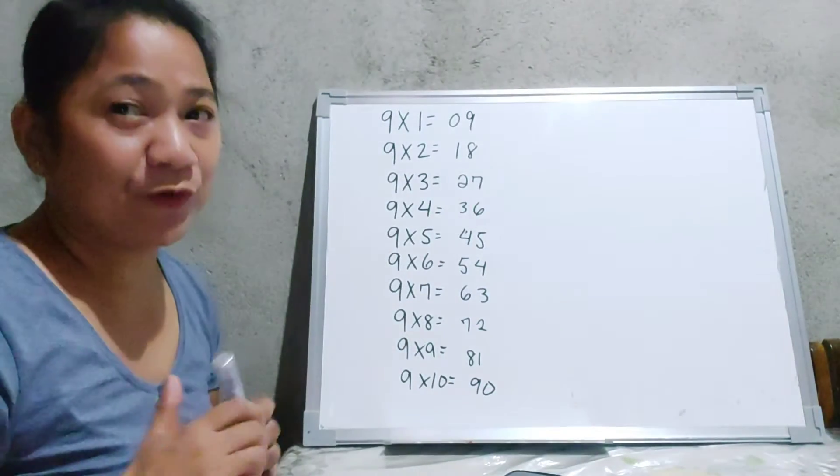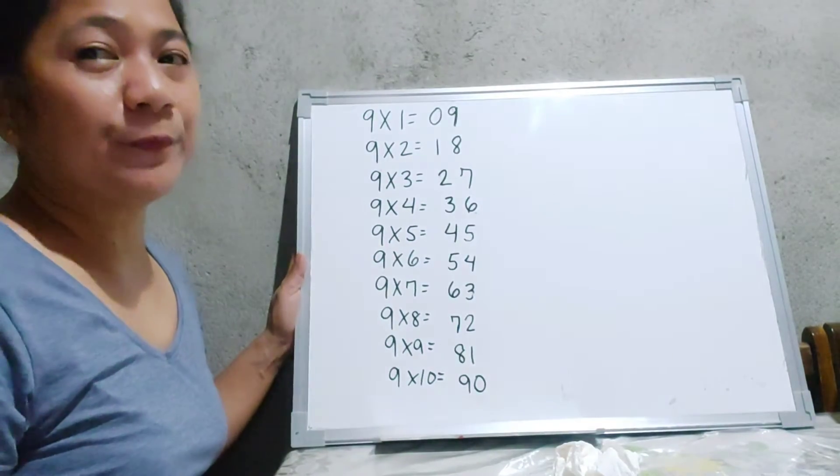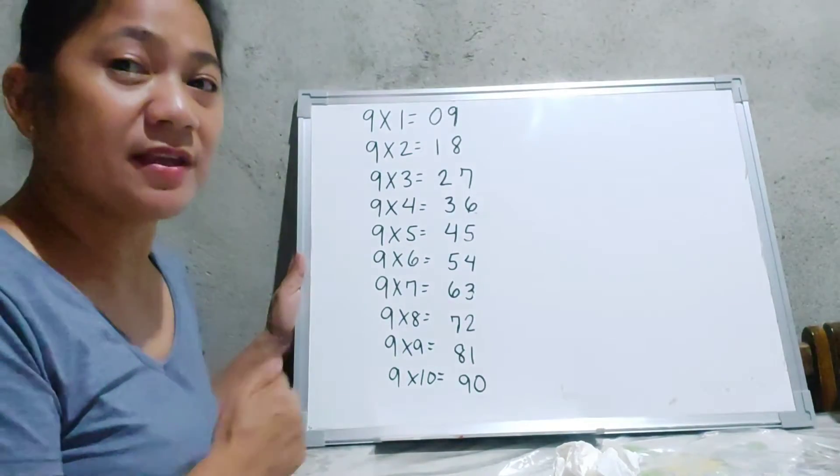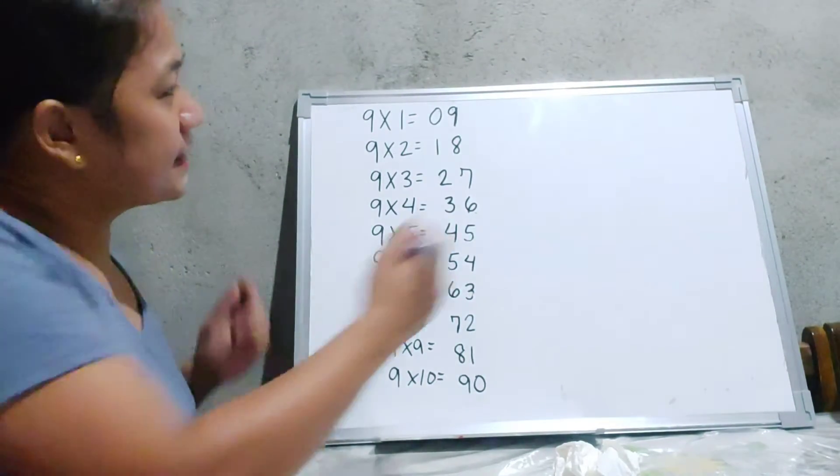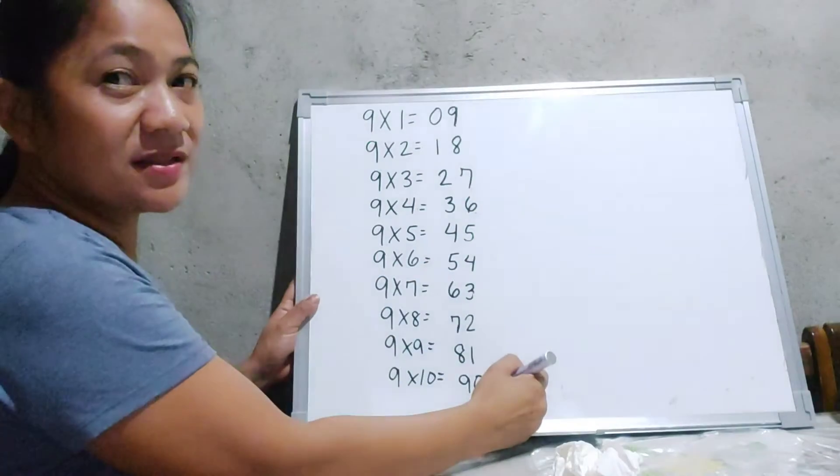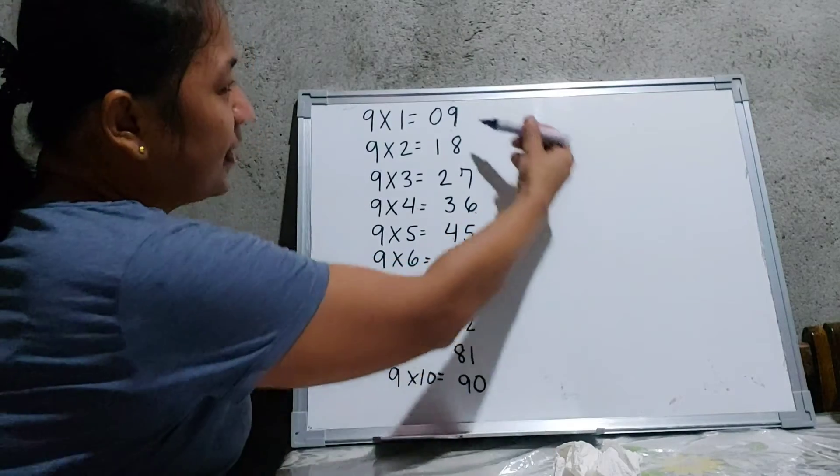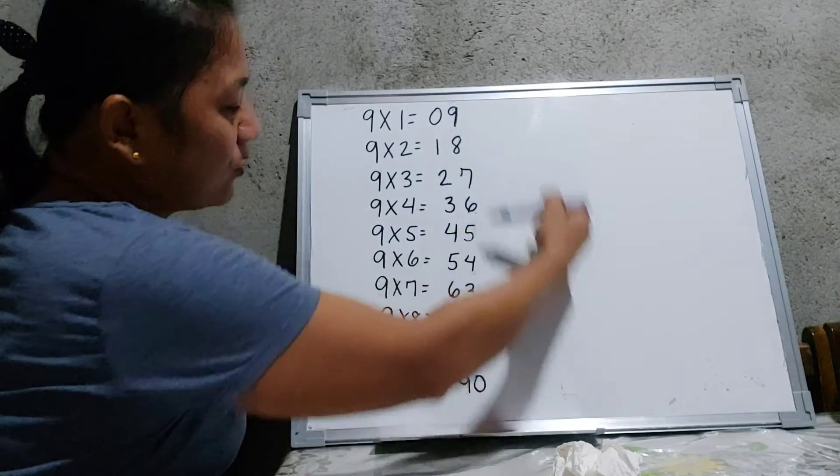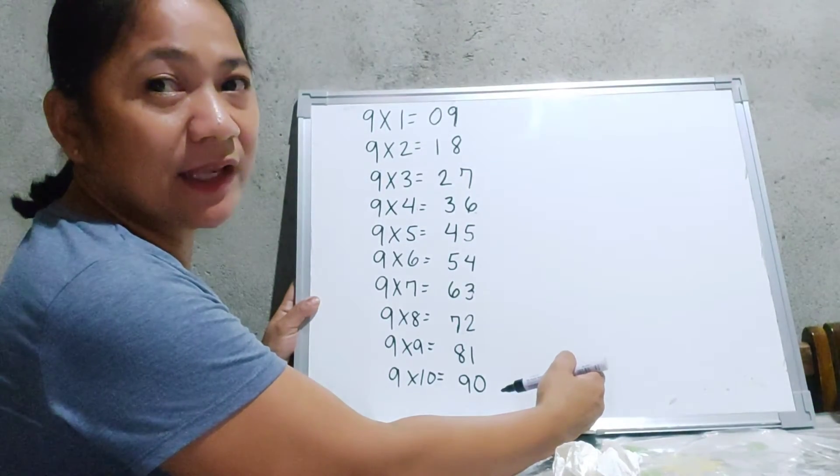So here comes the first trick. If you have noticed, the product that we have in this table, the ones value of the product was begin with 9 and ends with 0. So if you take a look at this, the numbers from 9 to 0 was written into the descending form.